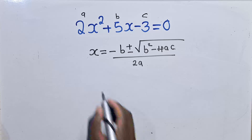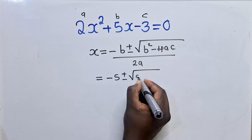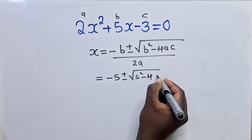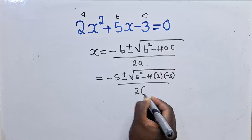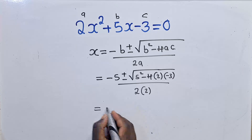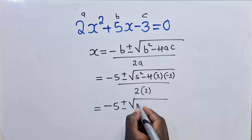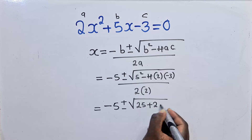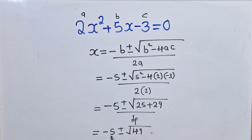So we substitute. We're going to have (-5 ± √(5² - 4 × 2 × (-3))) / (2 × 2). We simplify further: this is (-5 ± √(25 + 24)) / 4, which gives us (-5 ± √49) / 4.